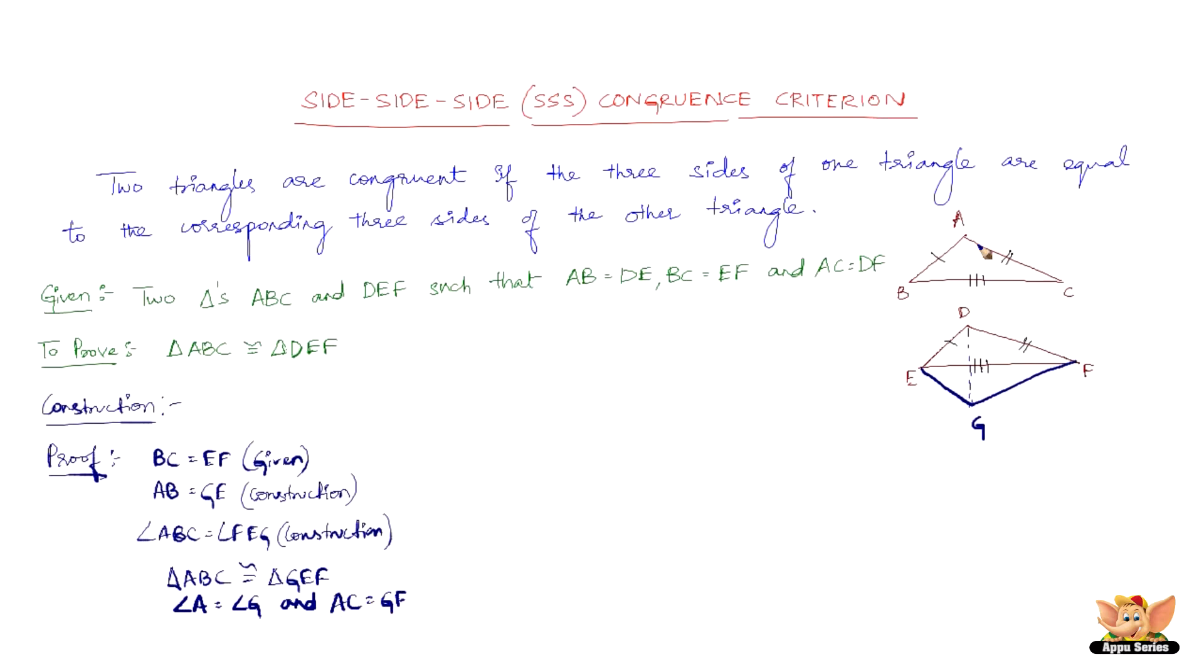Now we have AB equals DE and AB equals GE. So therefore we can say that DE equals GE. Similarly, AC equals DF and AC equals GF, therefore DF equals GF. Quite simple.